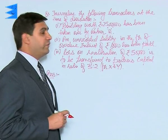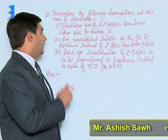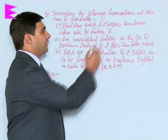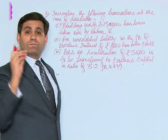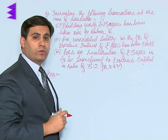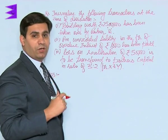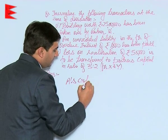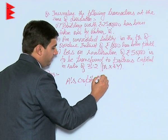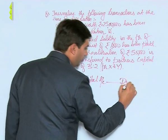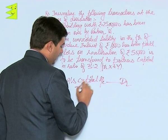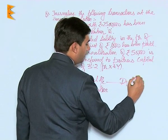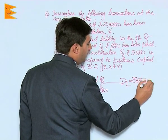Generalize the following transactions at the time of dissolution of a firm. The first entry is: a building worth rupees 25 lakh has been taken over by partner A. In this case, A is a partner who is taking over a particular asset at the time of dissolution of the firm. The entry for this would be A's capital account debited to realization account, and the amount would be 25 lakhs.